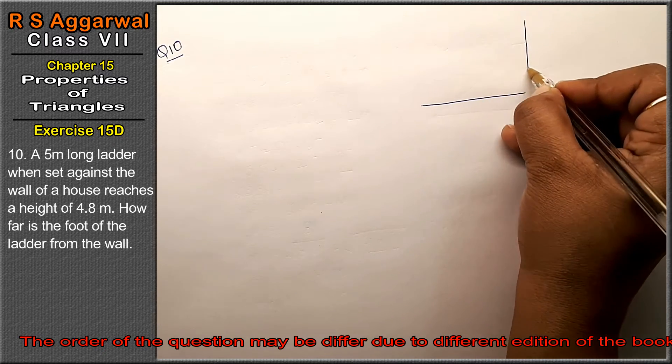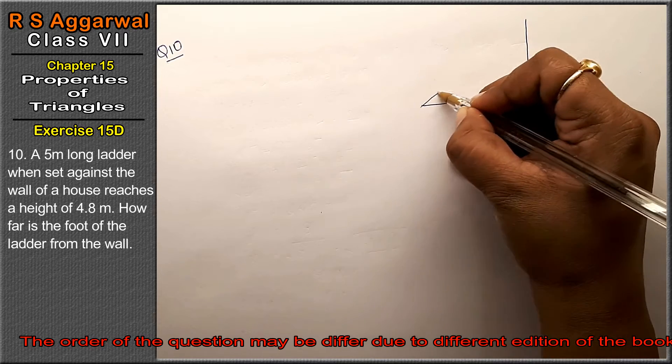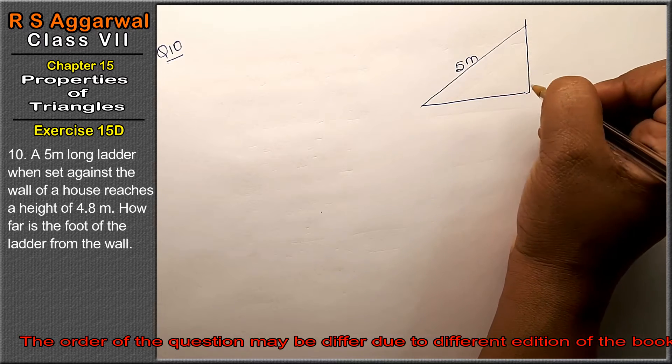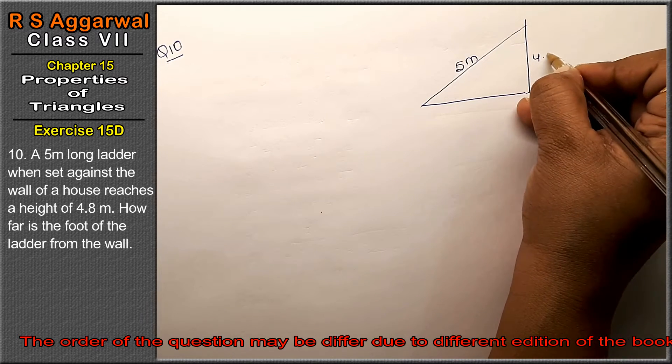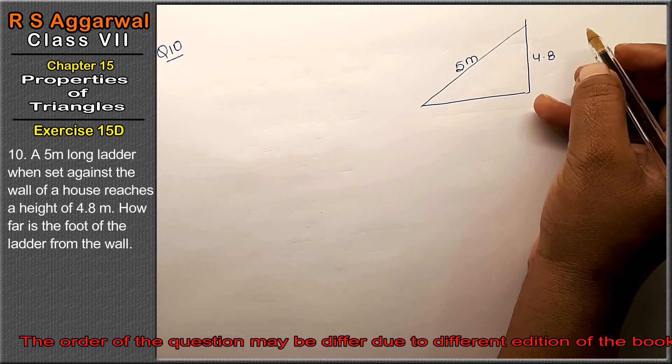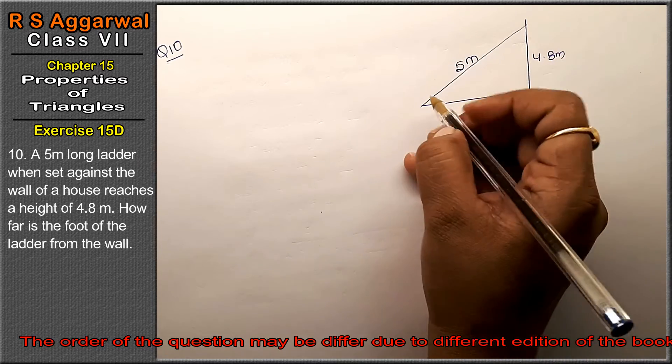So there is a ladder which is 5 meters long set against a wall, and it reaches a height of 4.8 meters. How far is the foot of the ladder from the wall?